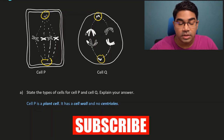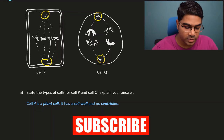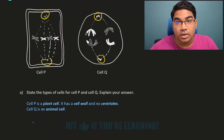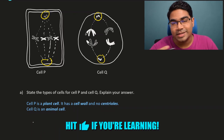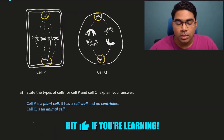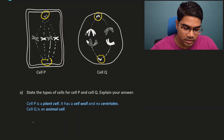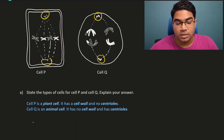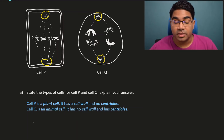Whereas when we look at cell Q, it's clearly an animal cell. Because it is exactly the opposite - there is no cell wall and there are centrioles. So this is how we differentiate them.